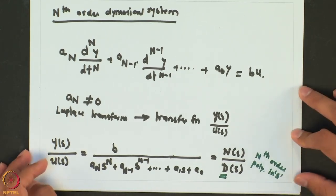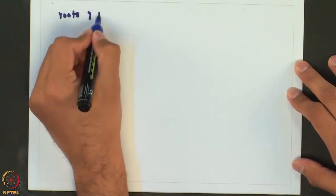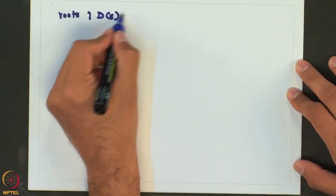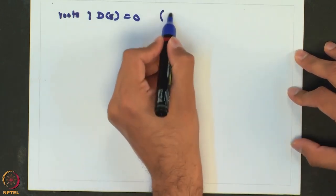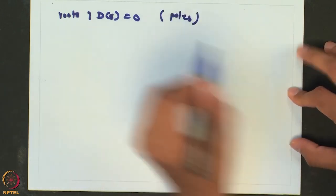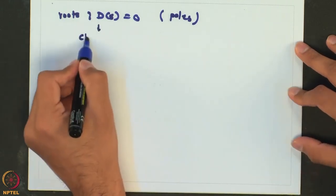We will not try to find out exactly how these systems respond to a step change in detail. What we are going to say qualitatively is that the roots of the denominator polynomial are also known as poles of the system, and this equation is known as the characteristic equation.